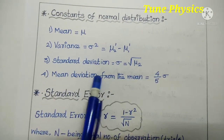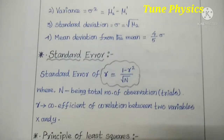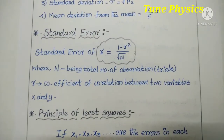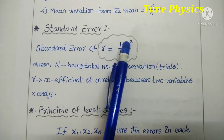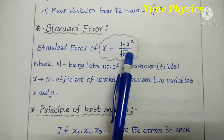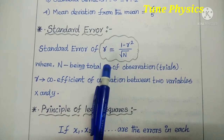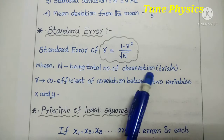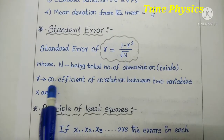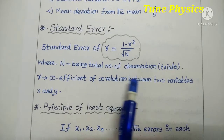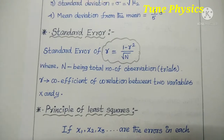Next, it is the heading: standard error. The standard error of r is equal to 1 minus r squared divided by root n. Here n is the total number of observations. So using the value of n, we can find the value of r. r is the coefficient of correlation between two variables x and y.